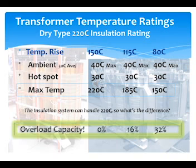Derating can be applied when selecting the KVA as well. If the load is 1000 KW, for example, at 0.9 power factor, perhaps a 1500 KVA or larger transformer should be used.